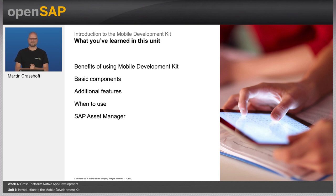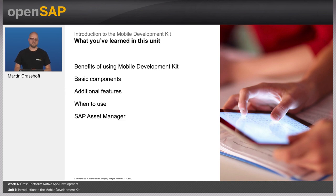In this unit, we have discussed the benefits of the Mobile Development Kit. We have seen that there are three basic components — the editor, the runtime, and the client. We have discussed all the features, when to use MDK, and looked at a real-world example of an application available from SAP. This concludes the first unit of week 4. In the next unit, we will dive into developing with the Mobile Development Kit.